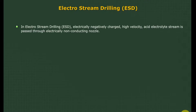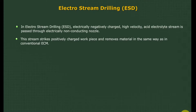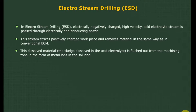In ElectroStream Drilling (ESD), an electrically negatively charged, high-velocity acid electrolyte stream is passed through an electrically non-conducting nozzle. This stream strikes the positively charged workpiece and removes material in the same way as in conventional ECM. The dissolved material — the sludge — dissolved in the acid electrolyte is flushed out from the machining zone in the form of metal ions in solution.